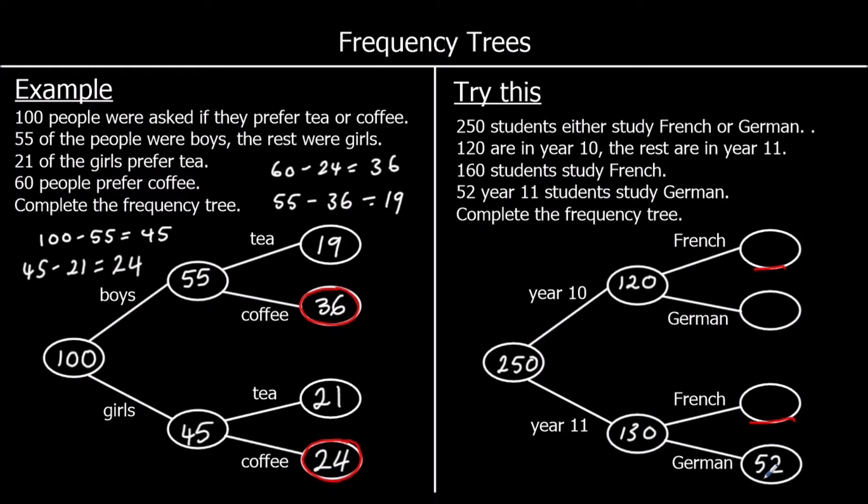130 take away 52. So what do you have to add on to 52 to get 130? So add 48 to get to 100, then another 30. So it's 78.